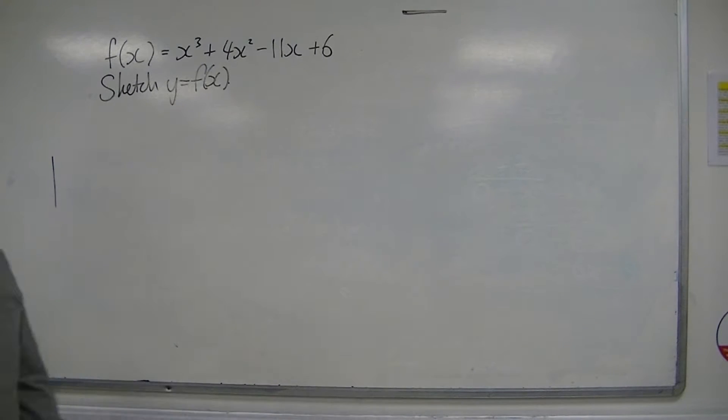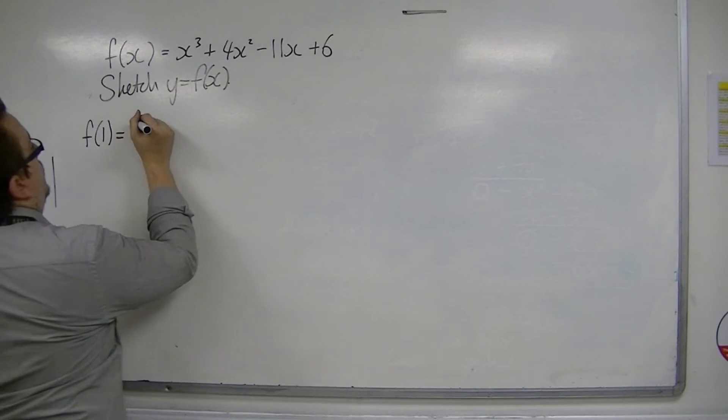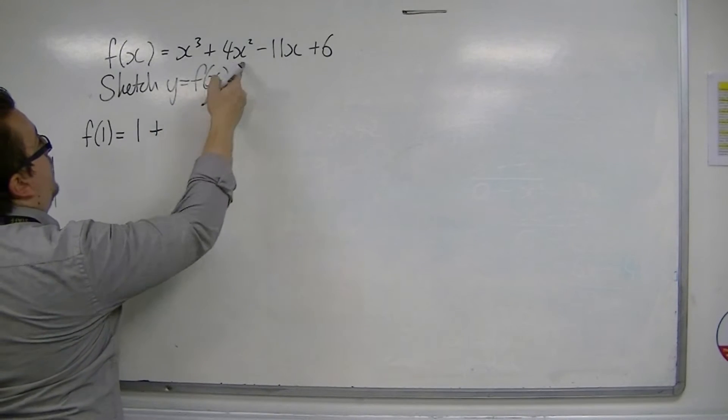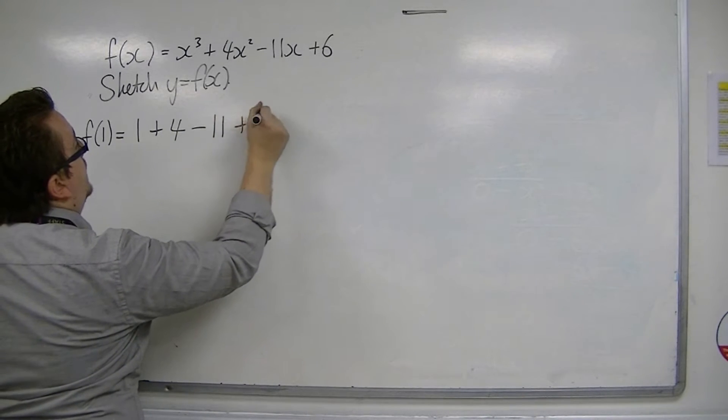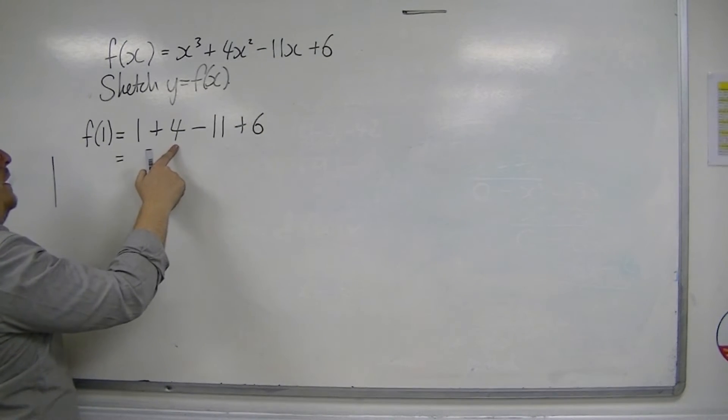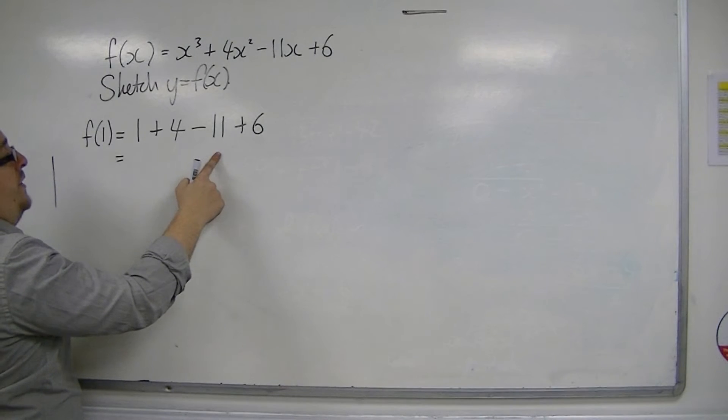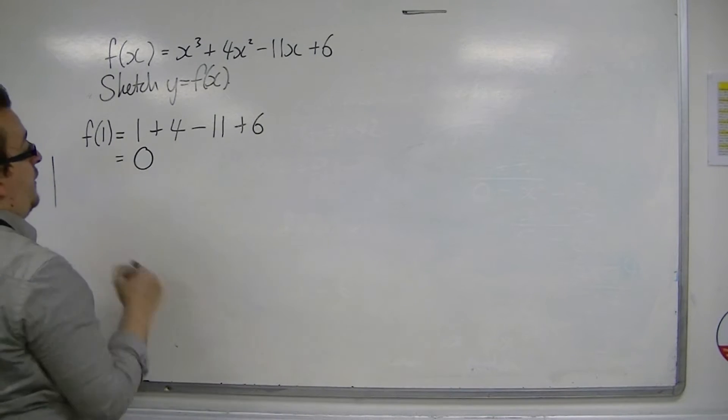So let's start off with the easiest one, f of 1. f(1) is equal to 1 cubed plus 4 lots of 1 squared, take away 11 lots of 1 plus 6. And we get 1 plus 4 is 5, take away 11 is minus 6, plus 6 is 0. Excellent!